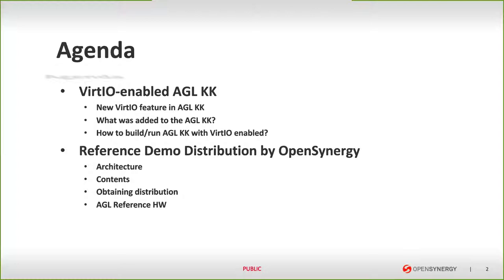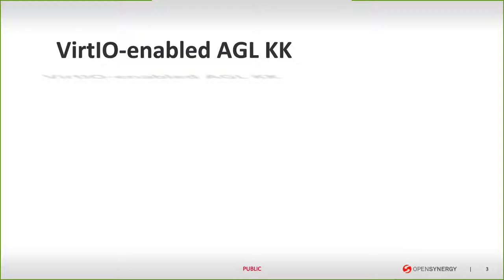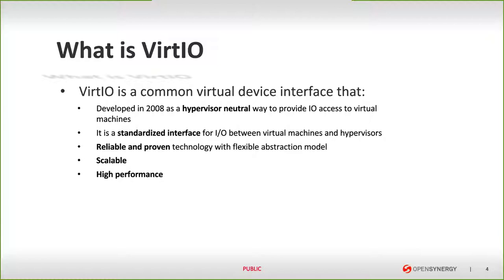Let's start with VIRTIO-enabled AGL KK. Before jumping to AGL KK, I would like to say a couple of words about VIRTIO itself. VIRTIO is a standard — a common virtual device interface that was developed back in 2008 as a hypervisor-neutral way to provide IO access to VMs. It is a standardized interface between virtual machines and hypervisors. It has a standardization body called OASIS that prepares and publishes the specification. This technology proved to be reliable, flexible, scalable, and high-performance. It is coming from the cloud world.